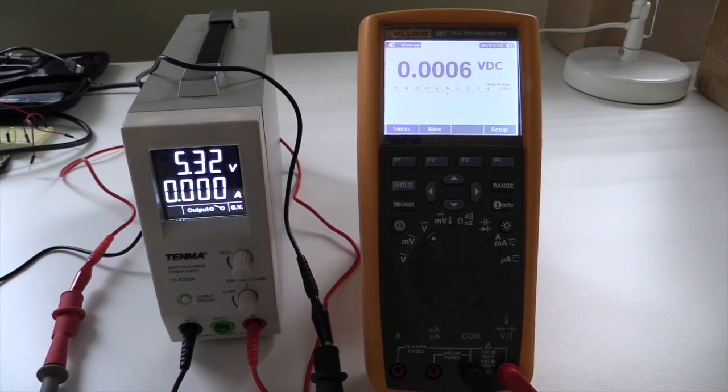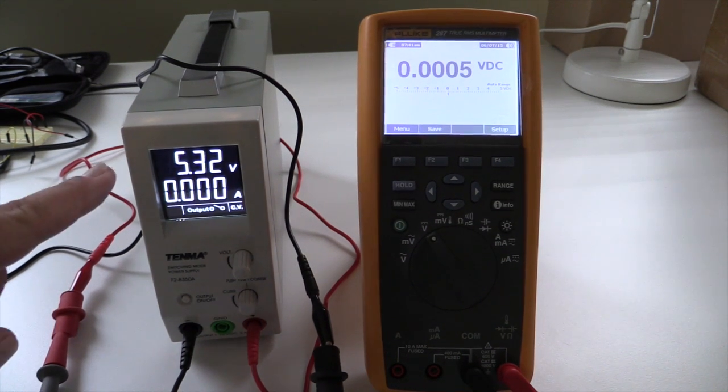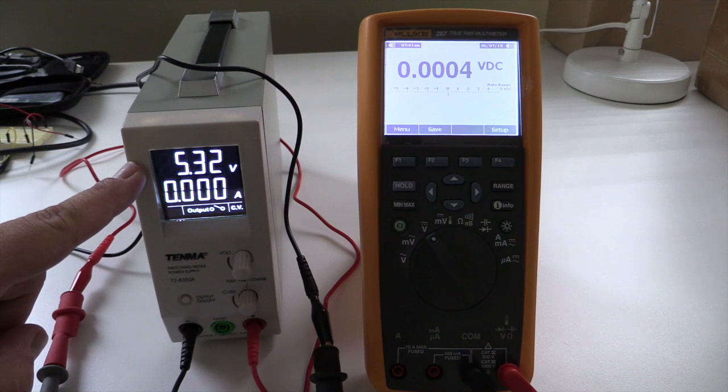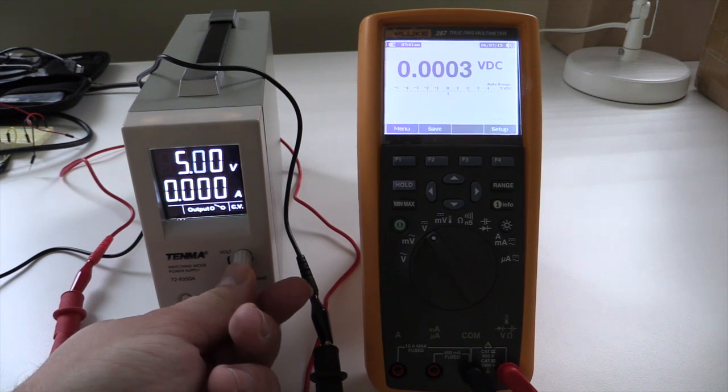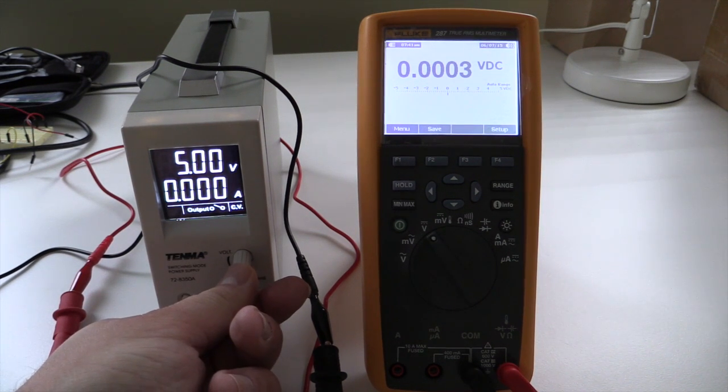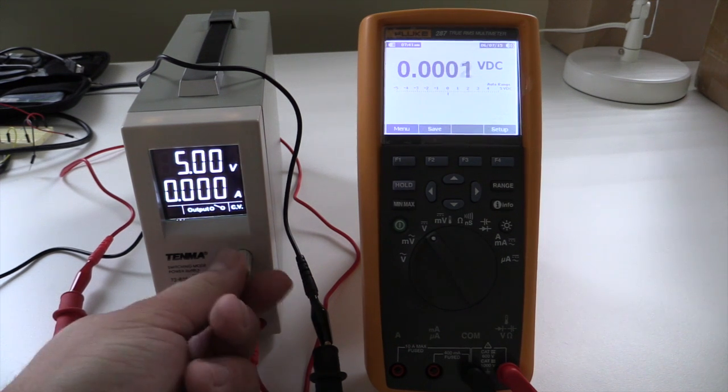But the big thing that I want to talk about is over here on the right you'll see that it says 5.32 volts. When I turn the adjustment knob, I have the adjustment set to 5 volts, but it's telling me 5.32 are coming out. Have it set to 5.